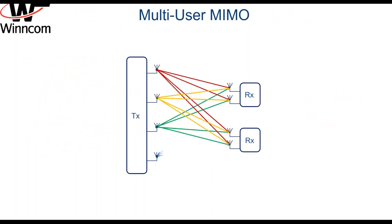To move forward, let's have a look at the multi-user MIMO concept. The idea behind MU-MIMO is simple: it is to communicate with multiple users simultaneously in order to deliver more throughput. To have an efficient multi-user system, there are two technologies in use: beamforming and sounding.